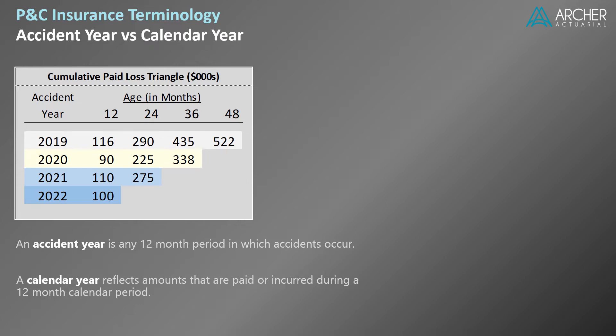These concepts are best understood by example. We're going to use this cumulative paid loss triangle to illustrate each term. We'll begin with a quick refresher course on loss triangles. The triangle format is simply a useful way to organize claims data. In this example, paid losses are organized by accident year. Changes in cumulative paid losses by accident year are presented from left to right at 12-month intervals called ages.